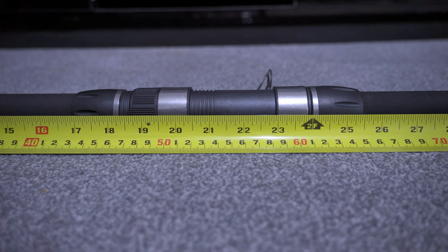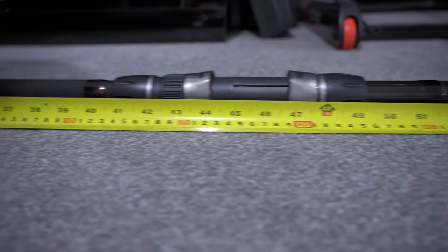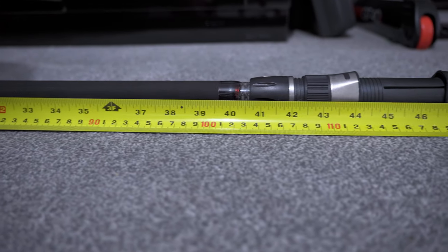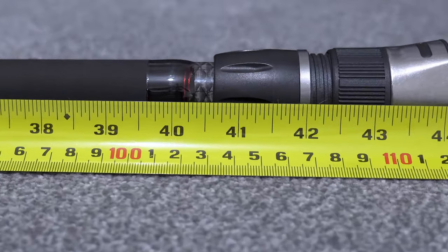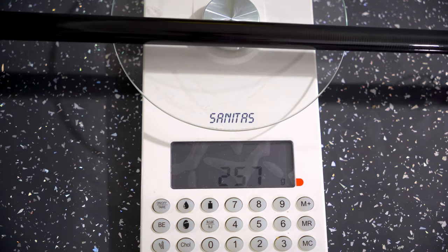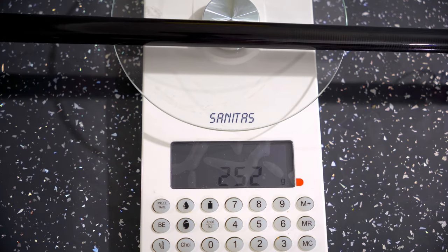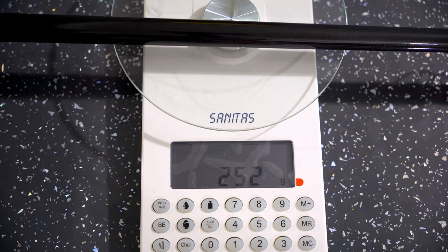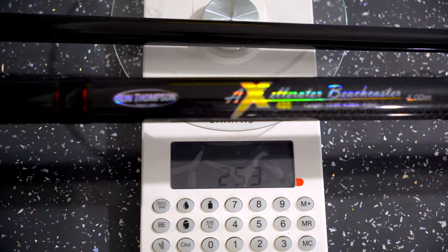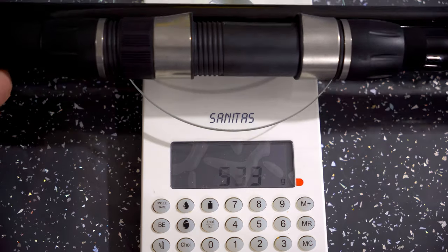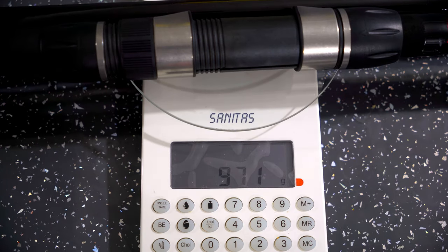The sliding reel seat can only be securely positioned as low as 17 inches up to just about 40.5 inches above the rubber shrink wrap. The top section weighs somewhere between 252 to 253 grams and with the bottom section and the sliding reel seat a total of 971 grams.